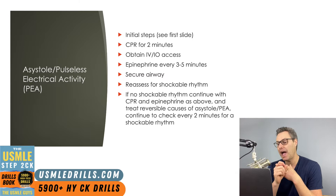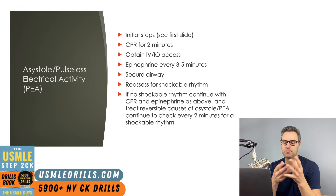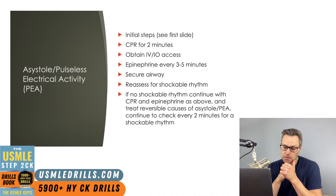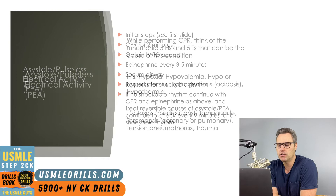Make sure to secure the airway as well with an endotracheal tube or a supraglottic airway. After that, do a pulse check and rhythm check to see if a shockable rhythm has developed. If not shockable, continue CPR and epinephrine, then treat reversible causes of asystole and PEA if possible. Continue checking every two minutes for pulse and shockable rhythm development.